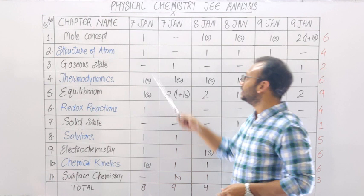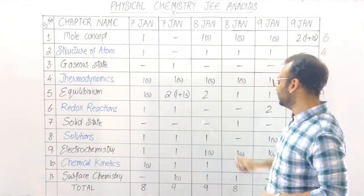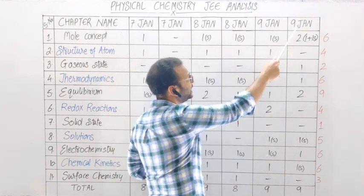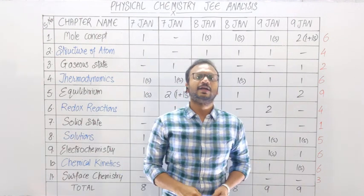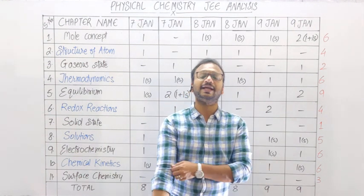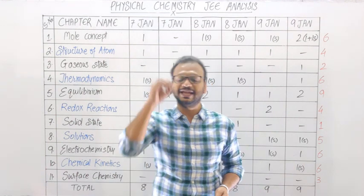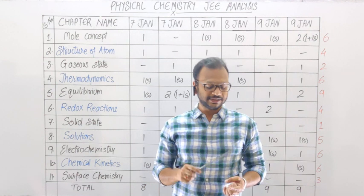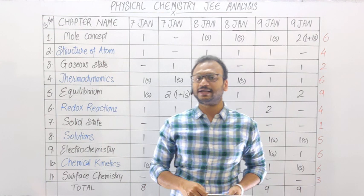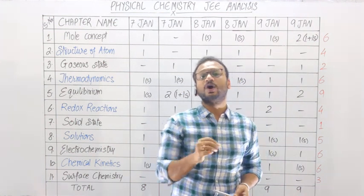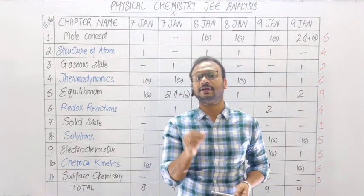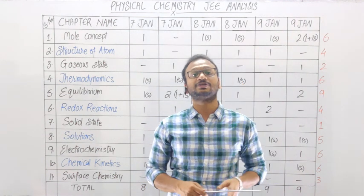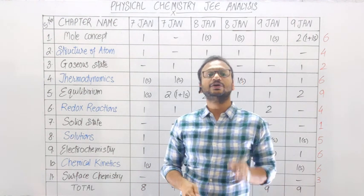Electrochemistry mein: 7th January morning aur evening shift mein ek-ek question tha; 8th January morning shift mein ek subjective question tha aur evening shift mein bhi ek subjective question tha; 9th January morning shift mein ek subjective question tha lekin evening shift mein ek normal 4-options waala question tha. Total: 6 questions — yani har paper ke andar ek question electrochemistry mein se milne hi waala hai. Nernst equation par question poochh sakta hai, E0 value calculate karne ka question, formula: E0 = (N1·E0₁ + N2·E0₂)/(N1+N2), aur Kohlrausch's Law — conductance waala part bhi bahut achhe se cover karein.